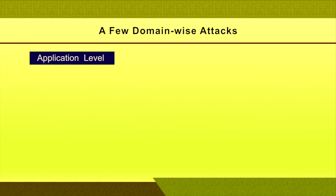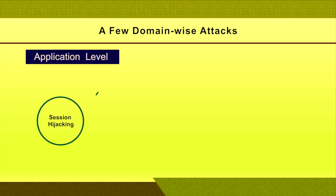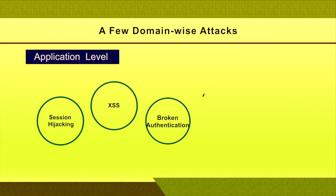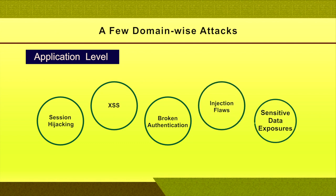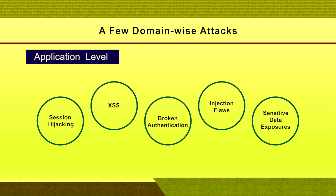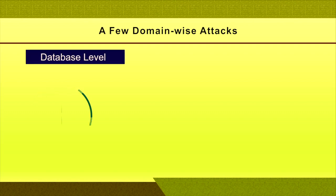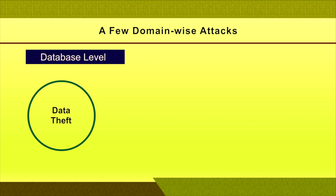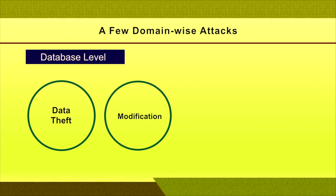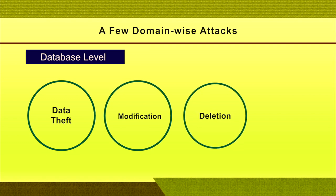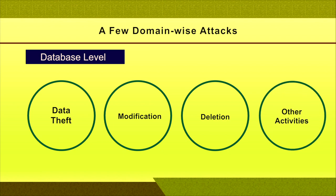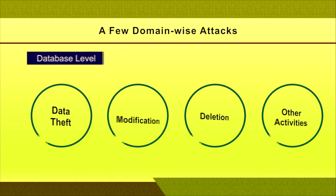At application level, many violations and hacking attacks occur, including session hijacking, cross-site scripting, broken authentication, injection flaws, and sensitive data exposure. These are some of the vulnerabilities and attacks done by hackers at the web application level. At data or database level, hackers connect to data or databases for data theft, data modification, data deletion, or other malicious activities. These are the domain-wise attacks across network, system, application, and database levels.